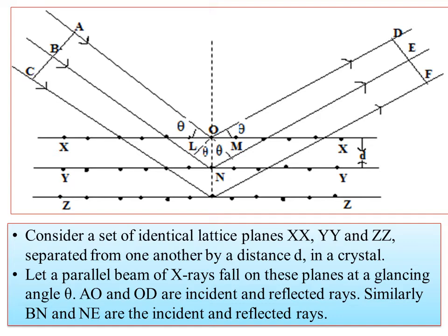Consider a set of identical lattice planes: XX, YY, and ZZ. The surface of the lattice planes is the same for all crystals. The incident light is the X-ray, which falls on these planes at an angle theta. The reflected rays from the X, Y, and Z planes are considered.